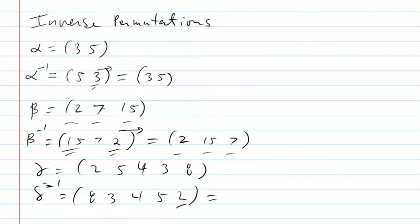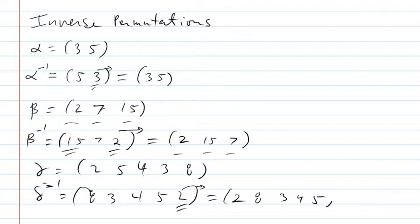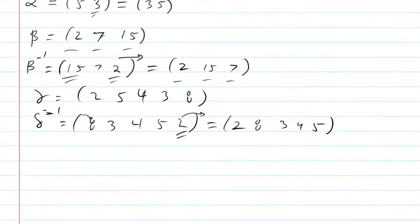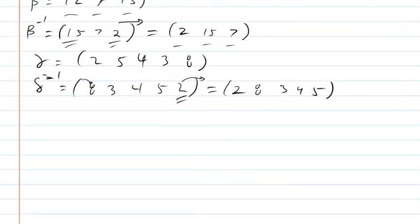You could still put the smallest number first. And then the second number, going to the right, would actually become eight, then three, four, five. In general, when I make an inverse for a cycle, I'm going to go back to alpha.